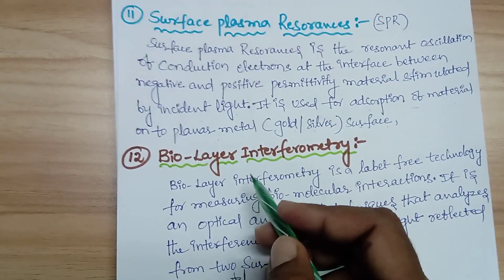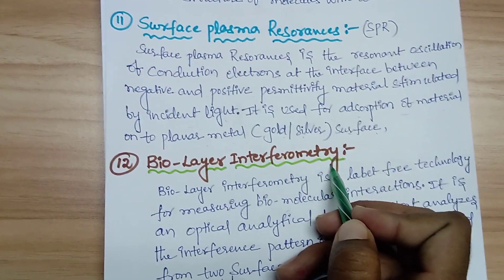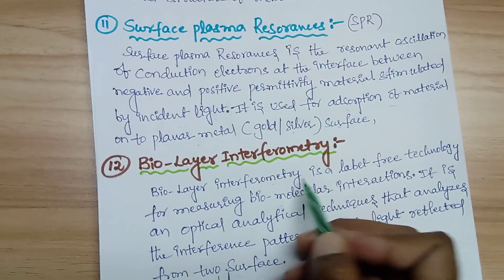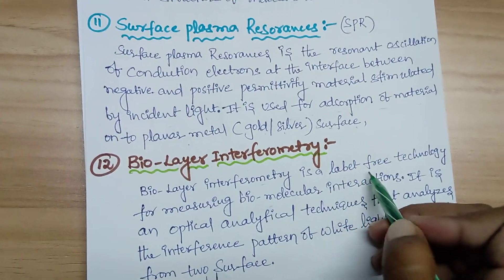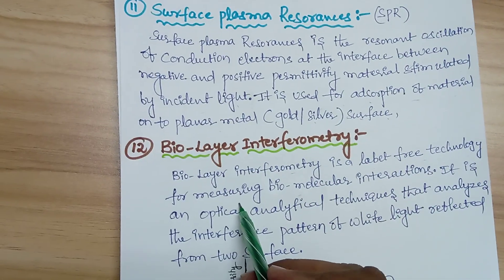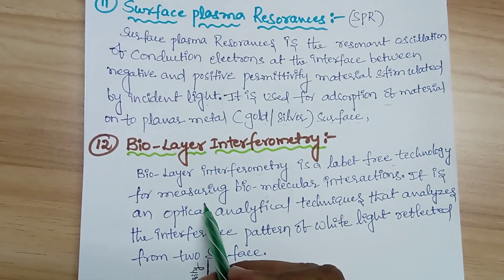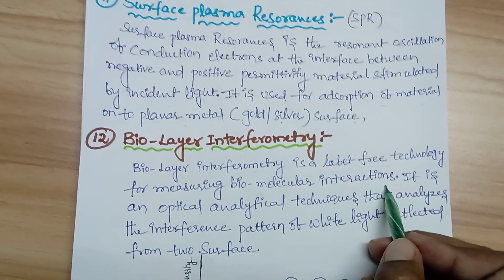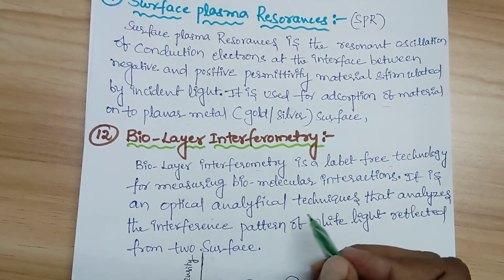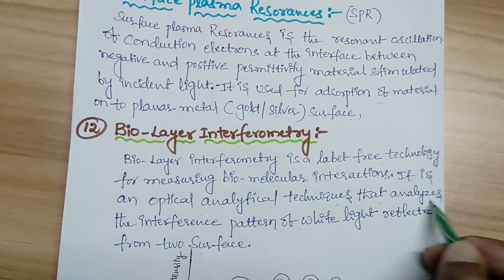The next technique is Biolayer Interferometry (BLI). Biolayer Interferometry is a label-free technology for measuring biomolecule interactions. It is an optical analytical technique that analyzes the interference pattern of white light reflected from two surfaces.